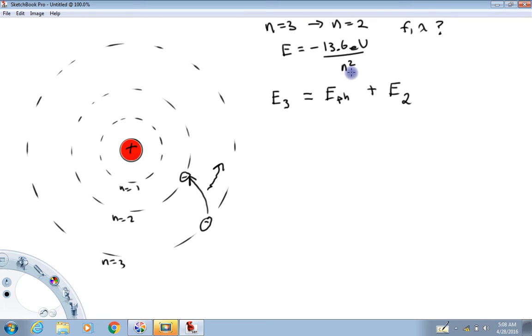Now we can calculate these values. So E3 is equal to minus 13.6 eV over three squared. And if we calculate a value for that, for energy three, I get minus 1.51 eV. Energy two, we would get by taking minus 13.6 eV and divide them by two squared. And when we do that, I get minus 3.4 eV.